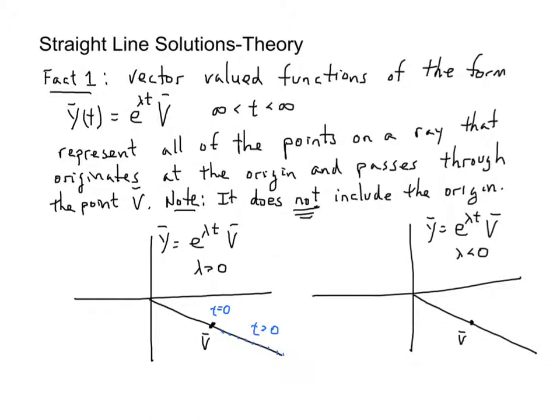On this side, however, when t is less than 0, e to the lambda t overall will always be a positive number. When t is a number less than 0, these are negative exponents, and e raised to a negative exponent is a number less than 1. And so, a number less than 1 times v will shrink v.